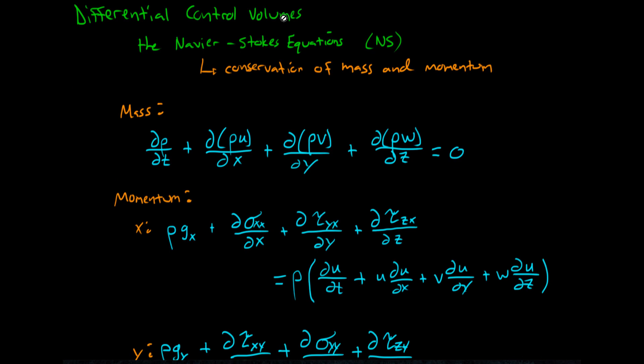If we apply the conservation of mass and the conservation of momentum to a tiny differential sized element, the result will be these set of equations, which are called the Navier-Stokes equations. They're just named for the people that invented them.